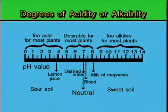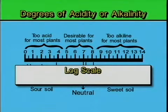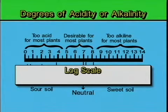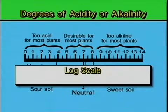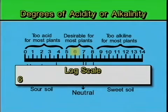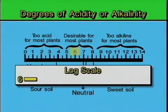The other thing we need to understand about this pH scale is that it is a log scale. What that means is that each time we move from one unit to the next on the scale, we are not changing the concentration of hydrogen ions by a factor of 1, but by a factor of 10. So a soil with a pH of 6 — one unit below neutral — would be 10 times more acidic than a soil with a pH of 7.